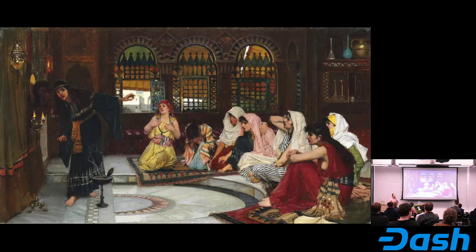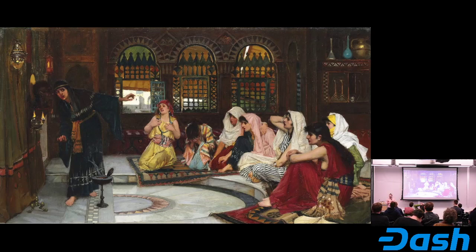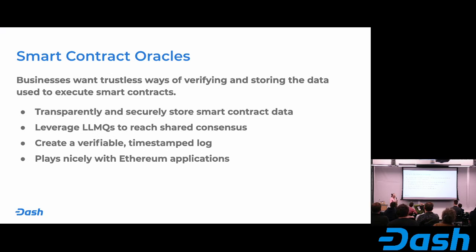This photograph represents ancient Ethereum developers seeking guidance from the Oracle who knows information that exists beyond the Ethereum blockchain — wailing in despair because they can't trustlessly execute their smart contracts. Fortunately, one of the really interesting use cases of the platform is that it can act as an Oracle for smart contracts on any platform. Dash Platform plays nicely with something like Ethereum or Zilliqa or other smart contract platforms, and you can use long-living masternode quorums to vote on the content of data being used to execute smart contracts, and also create an auditable record of that data, as opposed to just trusting whatever data is feeding into the smart contract.